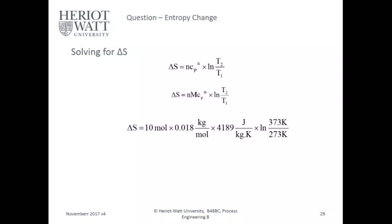For a mass-based form: delta S equals n·m·cp·ln(T2/T1). Numerically: 10 × 0.018 kg/mol × 4189 J/(kg·K) × ln(373 K / 273 K) = delta S = 3235.33 J/K.